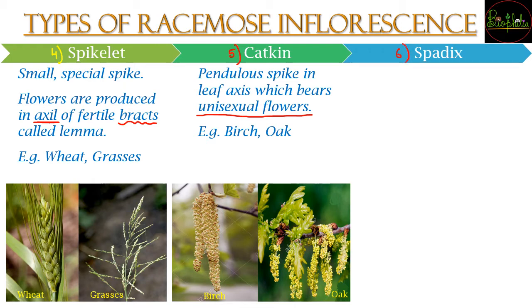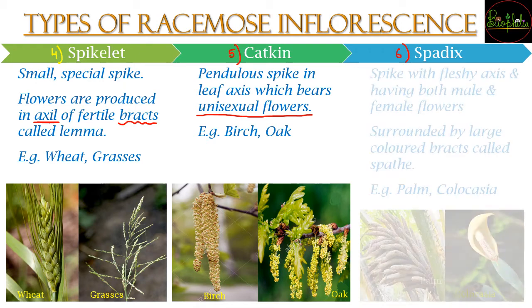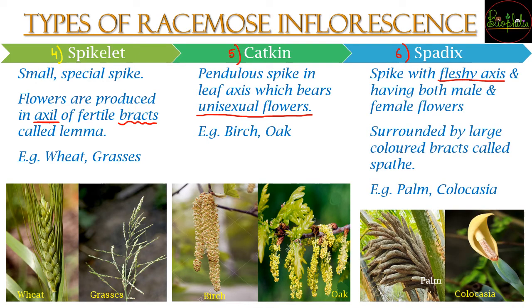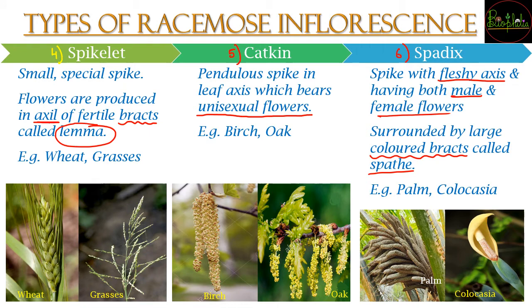The sixth type is the spadix. It is a spike with a fleshy axis bearing both male and female flowers, covered by a large colored bract called the spathe. The fertile bracts in spikelet were called lemma, whereas the colored bract in spadix is called the spathe. Spadix can be seen in the case of palm and colocasia.